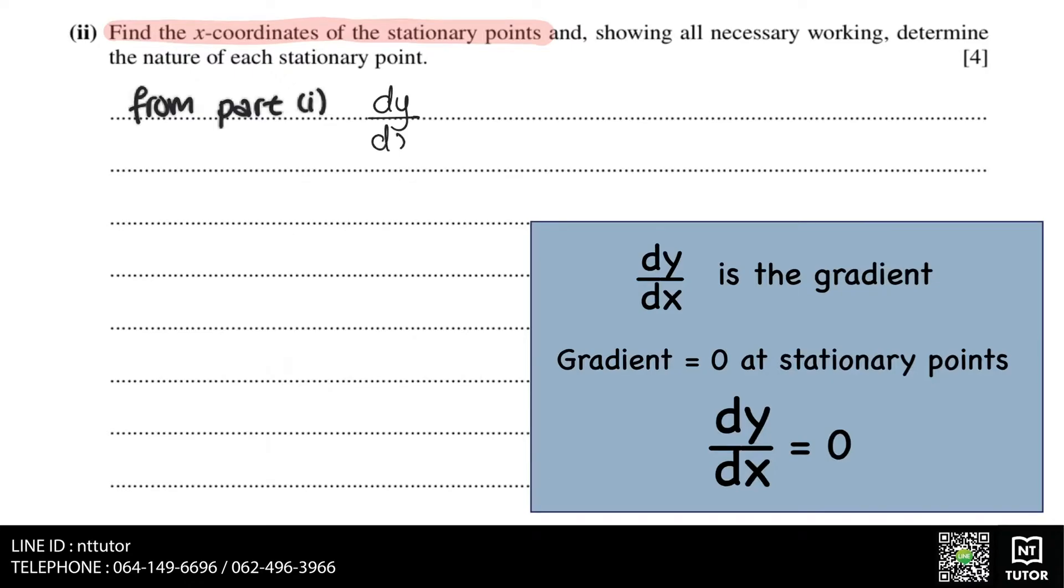From part 1, we already know what dy over dx is. So all we need to do is set dy over dx equal to zero and solve this for x.